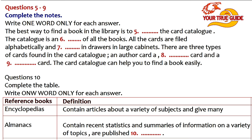Letters are stamped on the spine of each volume to indicate the alphabetical range of the topics in each volume. For instance, if you wanted to find information about the moon, you would look in volume 8 of the encyclopedia. Next is atlases. An atlas is a book of maps and may contain many different kinds of maps. The maps in an atlas are often arranged alphabetically by country or continent. Almanacs are also a type of reference book — a book that contains recent statistics and summaries of information on a wide variety of topics. It is published annually, with information listed alphabetically by subject.